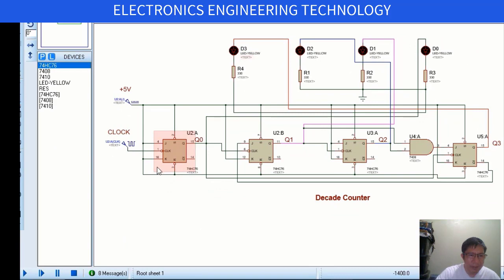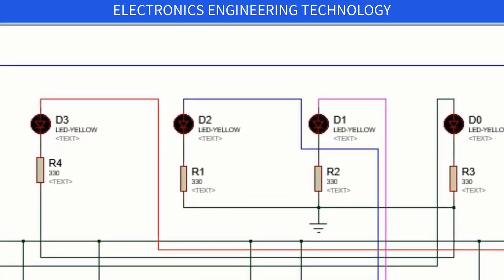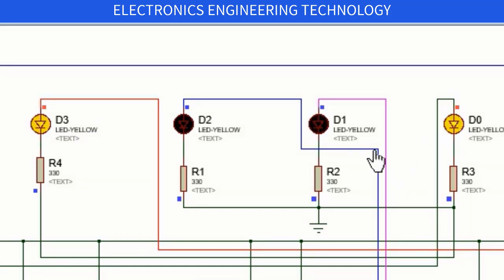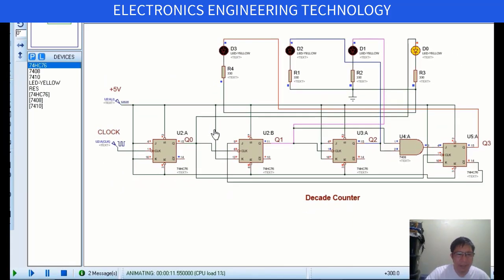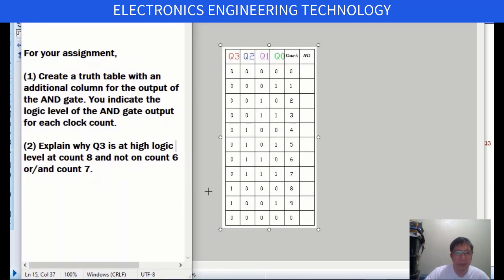You will see that the counting progresses from 0, 0, 0, 0, 0 up to 1, 0, 0, 1, then back to 0. This is the binary sequence of the decimal numbers from 0 to 9.